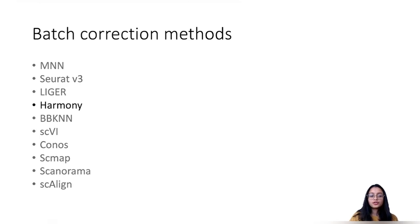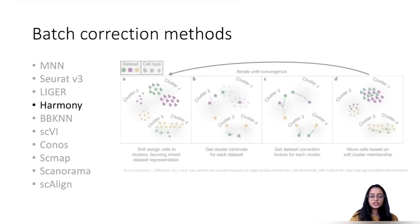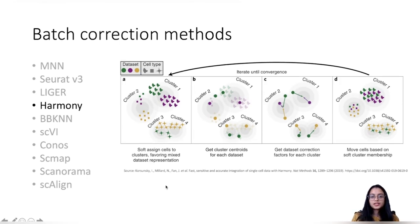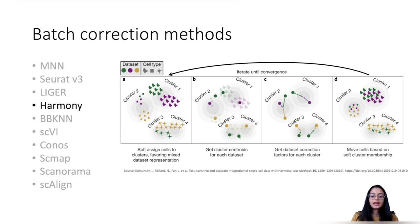Today we are going to use Harmony. To give a little idea about how Harmony works: Harmony uses an iterative clustering method which ensures that cells in each cluster come from as many batches as possible in each iteration. It maximizes the diversity of batches in each cluster, calculates a correction factor for each cell, and repeats this process iteratively, refining in each iteration until it converges.